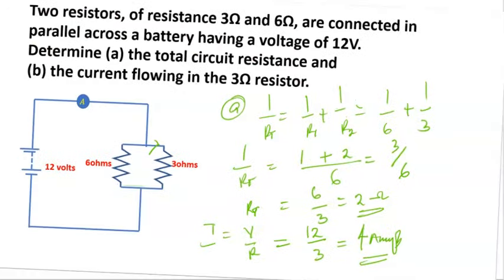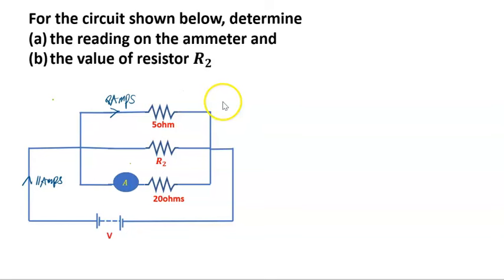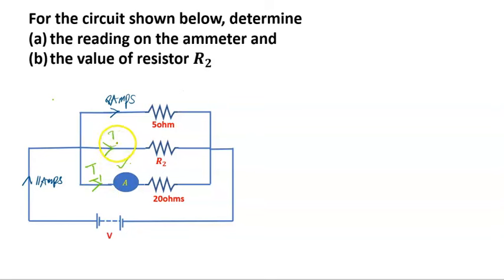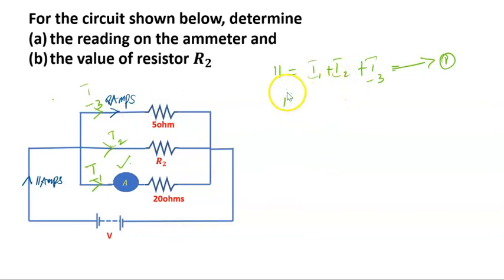Our second example is a three-resistor connected in parallel case. For the circuit shown, determine the reading on the ammeter. The ammeter reads the current flowing through one branch — let's call this I1. The current on the second link is I2 and on the third link is I3. The total current flowing into this node is 11 amps, so 11 equals I1 plus I2 plus I3. Let's call this equation one.